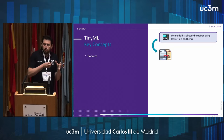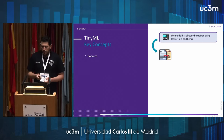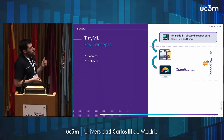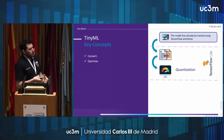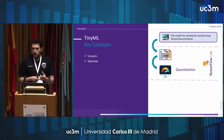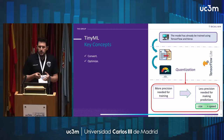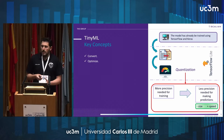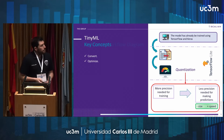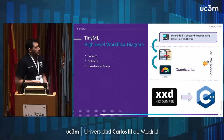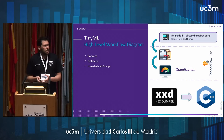The main key concepts of tiny machine learning are: first, we need to convert the model to be compatible with TensorFlow Lite. Second, we need to optimize the model from the point of view of execution time and memory. One of the main techniques for this is called quantization. When training a model, we need high precision to adjust internal parameters, but when making predictions we do not need such precision. Quantization changes internal data types to improve memory consumption and execution speed. Finally, we convert the model to a C++ representation using the XXD command.